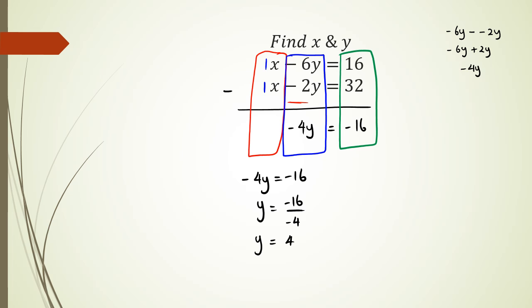Now I need to substitute in either equation and figure out what x is. I'm going to choose the second equation, which is 1x minus 2y equals 32. So x minus 2 times 4 equals 32. x minus 8 equals 32. Therefore, x equals 32 plus 8, which means x equals 40. So my two answers for the solution are x equals 40 and y equals 4.